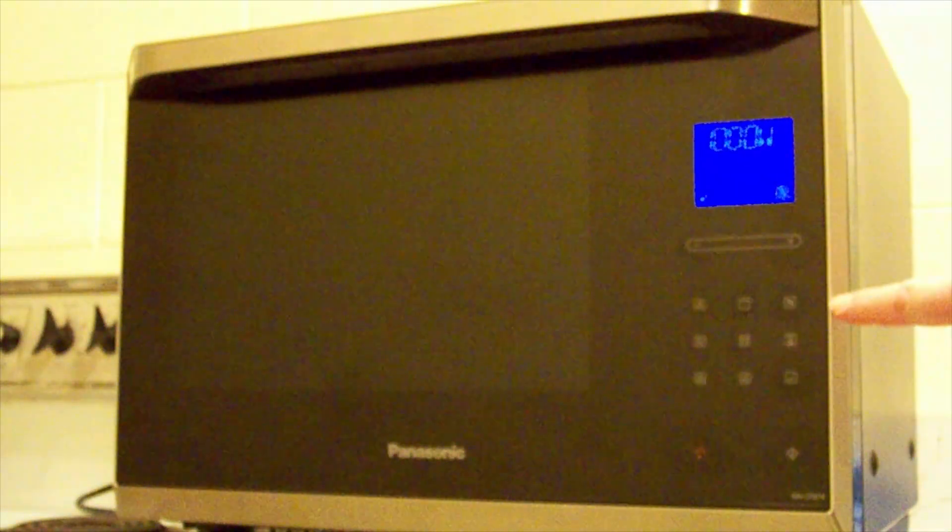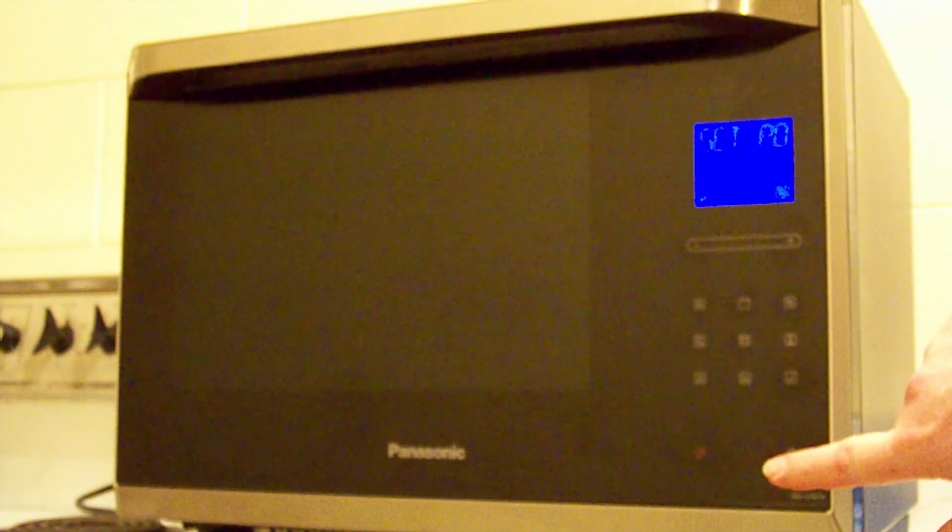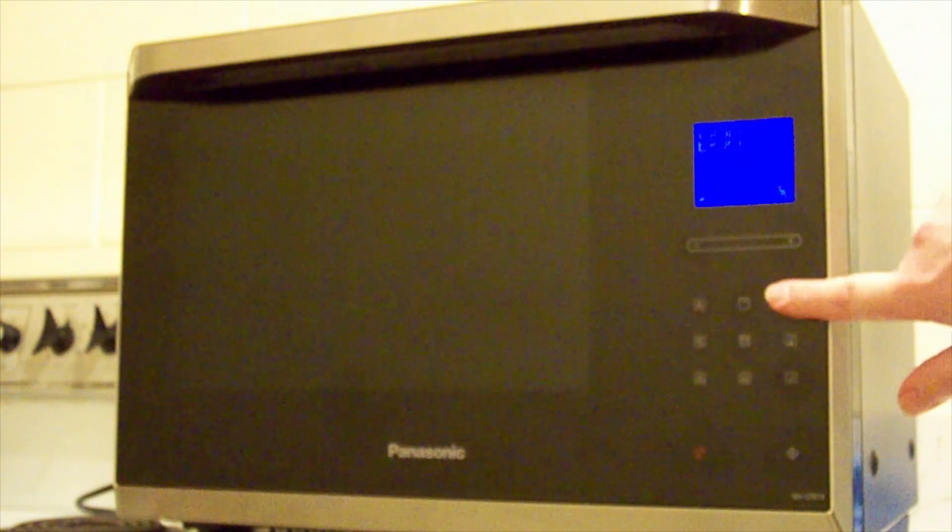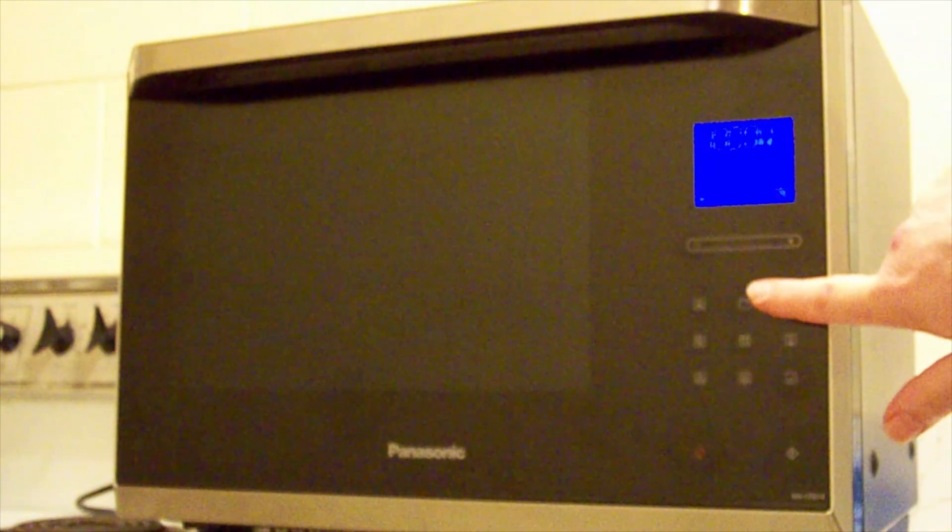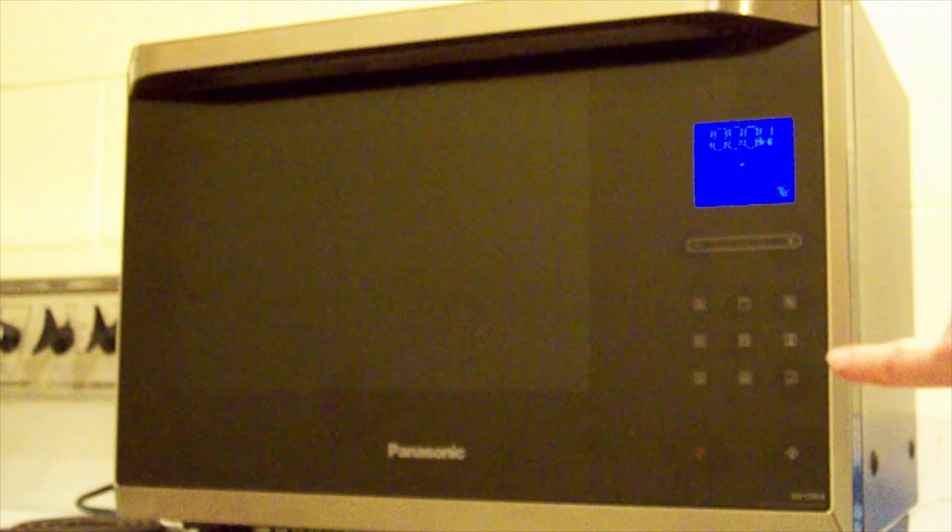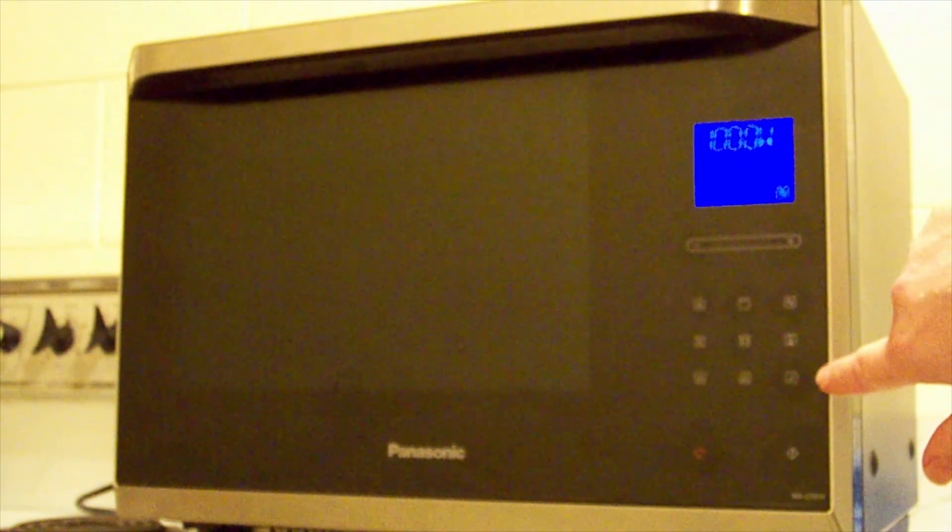We'll hit the microwave button, defaults to 1000 watts, then start, set power, then enter the time. We'll go 10 seconds and start. Immediately it comes up with the error H97. You can see that on the screen. It flicked the interior light on momentarily and right away H97. Let's pull the cover off and see if we can figure this out.